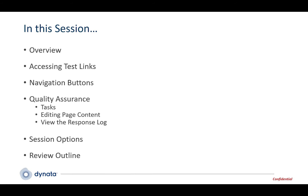In this series we're going to show you how to access your survey links for testing. We'll show you how to use the navigation options within the survey testing tools to be able to skip around and test specific parts of your survey. We'll also show you how to use the tasks option as well as some other features that will allow you to perform some quality assurance while testing.